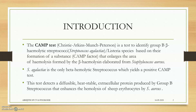The identification is based on the formation of a substance called the CAMP factor, which enlarges the area of hemolysis. Staphylococcus aureus produces beta-hemolysis that causes breakage of RBCs, and Streptococcus agalactiae will enlarge that area of hemolysis by producing the CAMP factor. Streptococcus agalactiae is the only beta-hemolytic Streptococcus that yields a positive CAMP test.